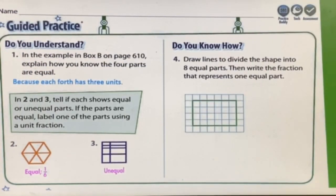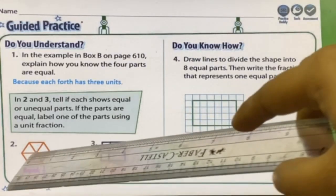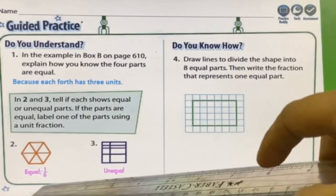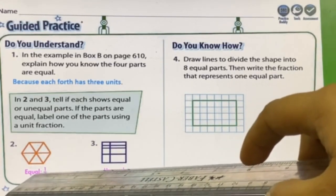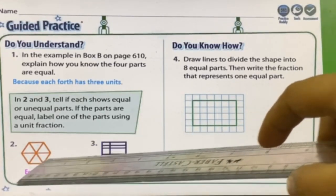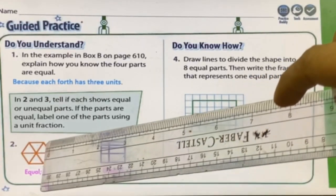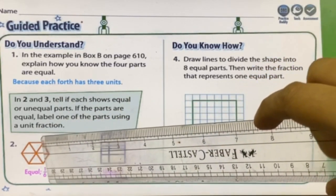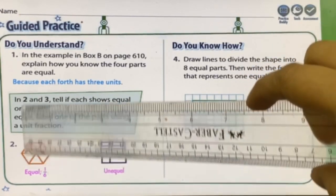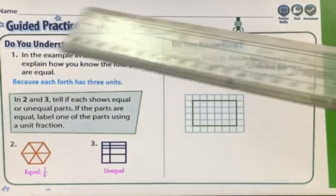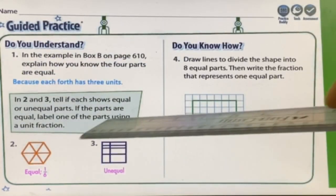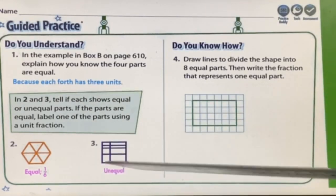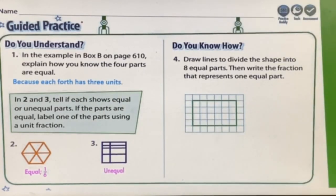For question two, this region is divided into equal parts, so I have written equal. There are six parts, so for one part the numerator is one and the denominator is six. The next shape is not divided into equal parts, so I cannot write a fraction for it.